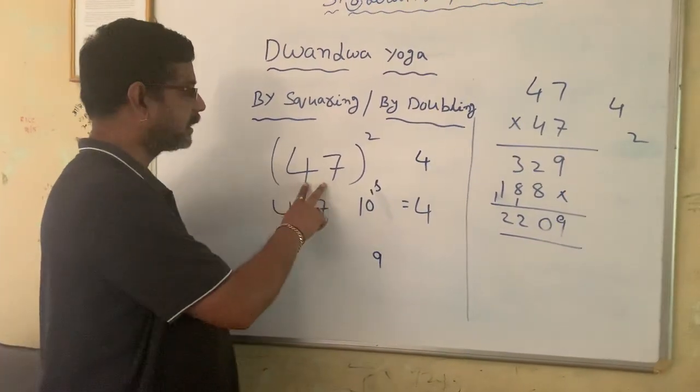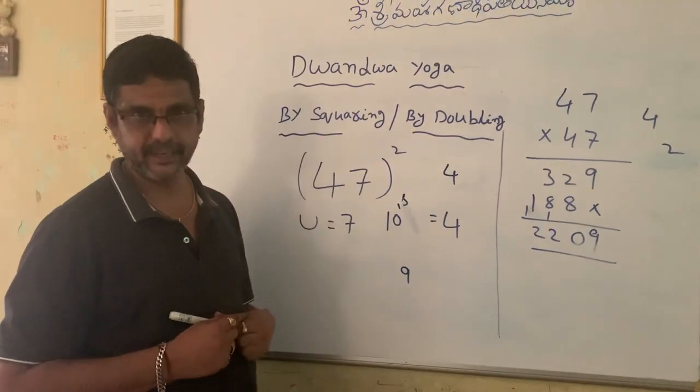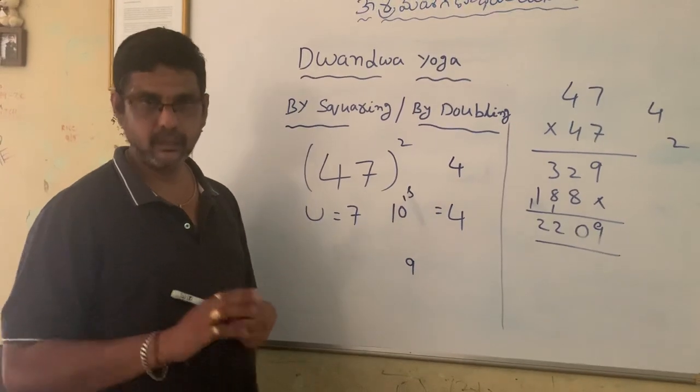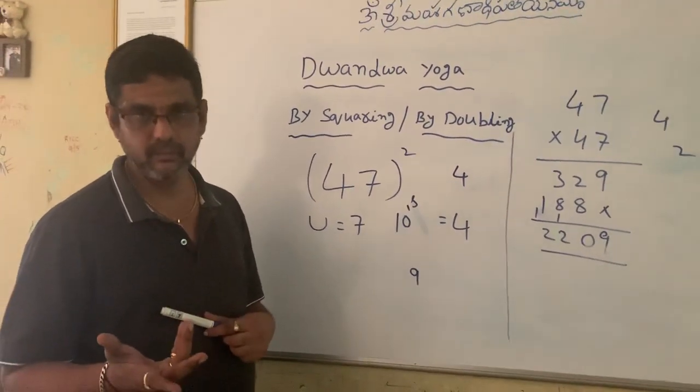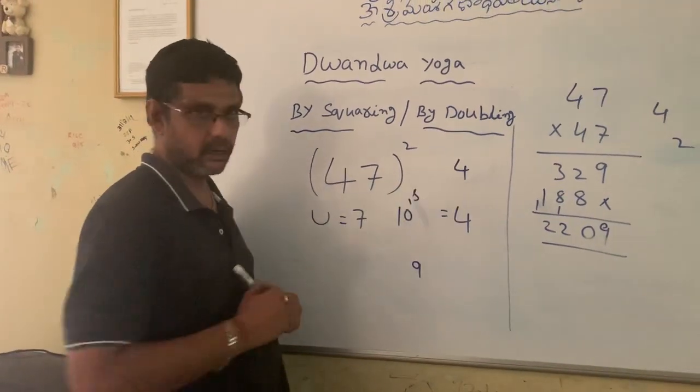Then multiply both the digits. 4 sevens are 28. Then double it. Double of 28 is 56. And add the leftover number to 56.